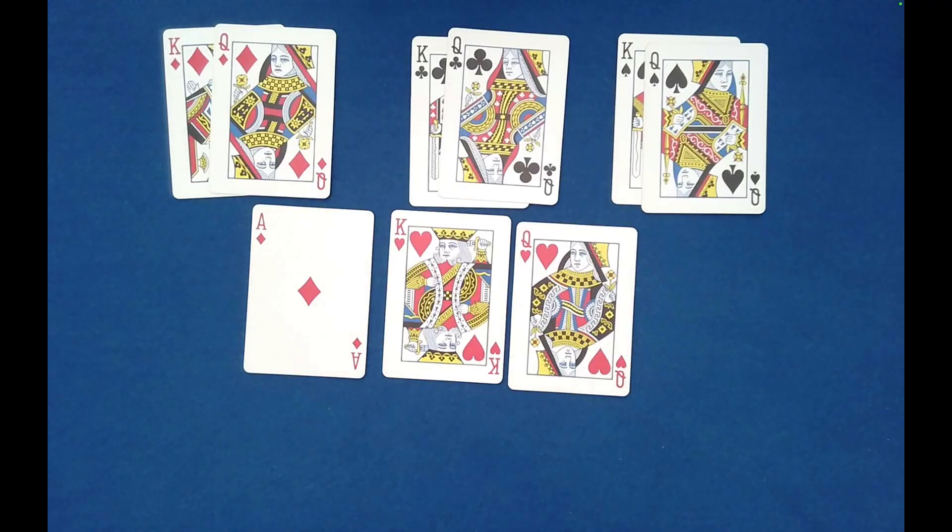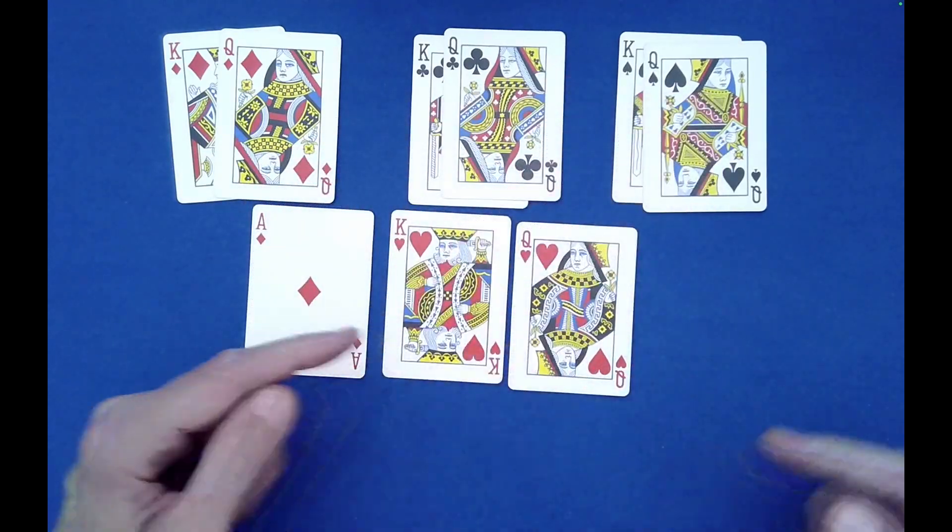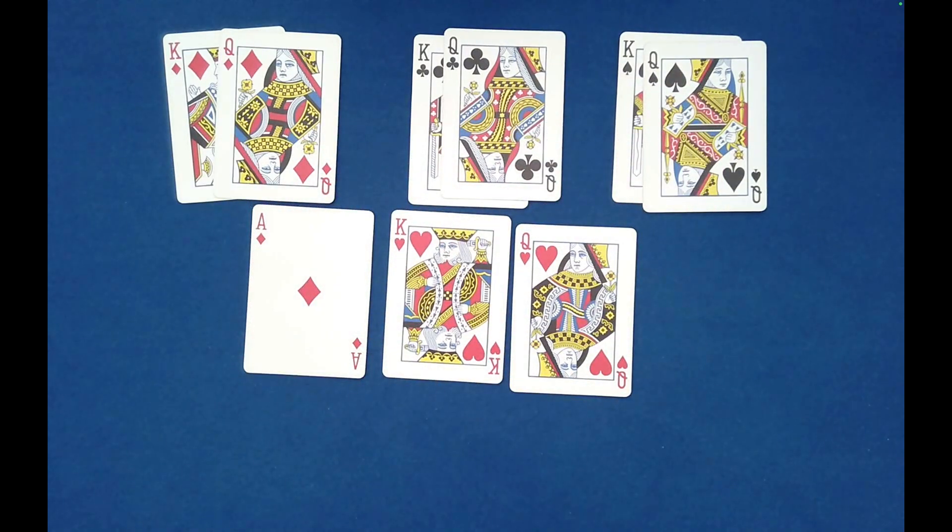But it's a very clever routine that gives the spectator so much freedom in the choices that they make that it really is hard to believe that it is guaranteed to always finish with revealing very clearly the suit of the king and queen the spectator freely chose at the start. So thank you for watching and take a look at other videos on the Absolute Math Magic channel.